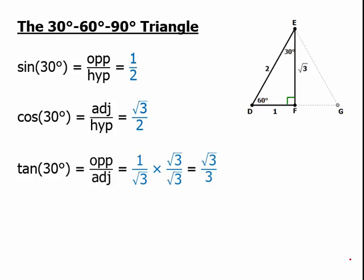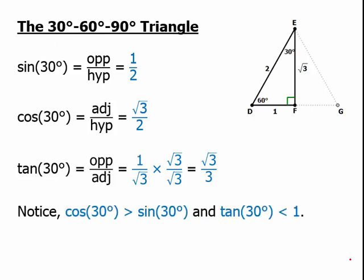So a couple things to notice. Notice that 30 degrees is an angle less than 45 degrees, so the cosine has to be bigger than the sine, precisely because for an angle less than 45 degrees, the adjacent has to be bigger than the opposite. And for much the same way, the tangent has to be less than 1.